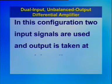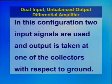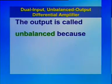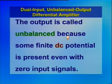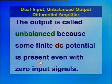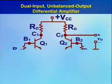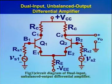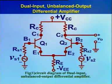In this configuration, two input signals are used and output is taken at one of the collectors with respect to ground. The output is called unbalanced because some finite DC potential is present even with zero input signals. The circuit diagram of dual input unbalanced output differential amplifier is shown in figure 1.